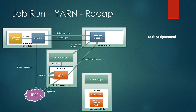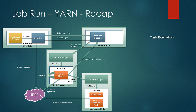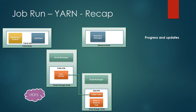If the job is not an Uber job, the application master contacts the resource manager to locate computing resources. The resource manager considers data locality while assigning resources. The application master then communicates with the node managers, which launch the YARN child. YARN child retrieves the code and other resources from HDFS and runs the task. YARN child sends the progress to the application master, which aggregates the report and sends it to the client. On job completion, YARN child and the application master terminate themselves and release computing resources for the next job. This covers the execution of a job in YARN.